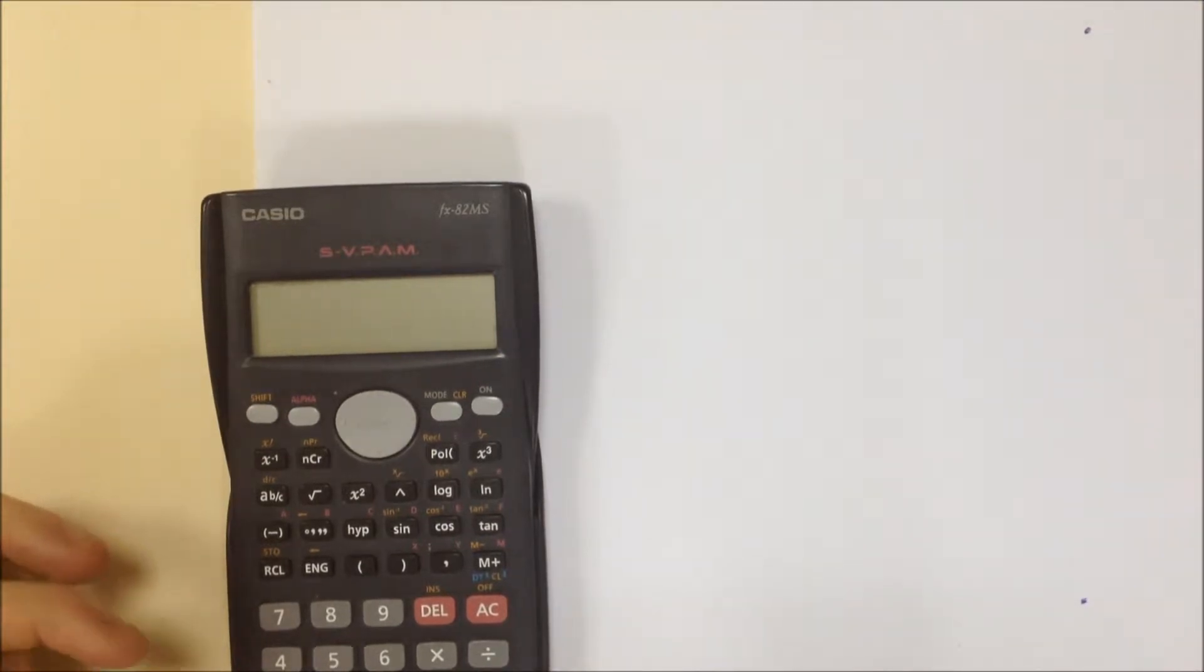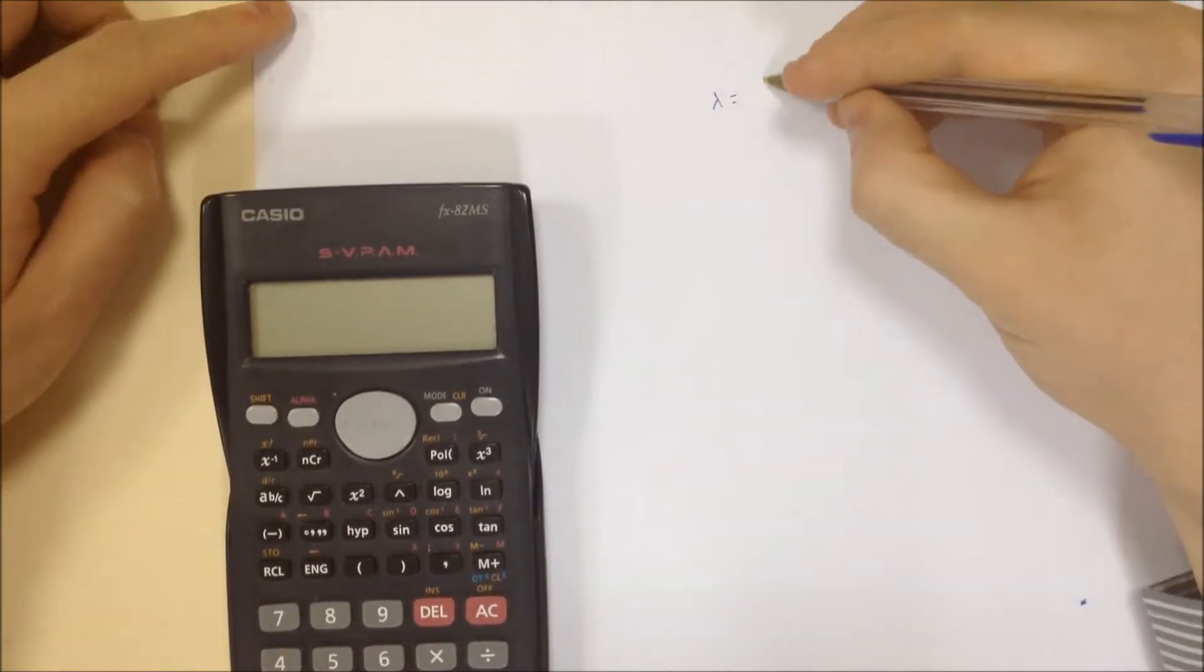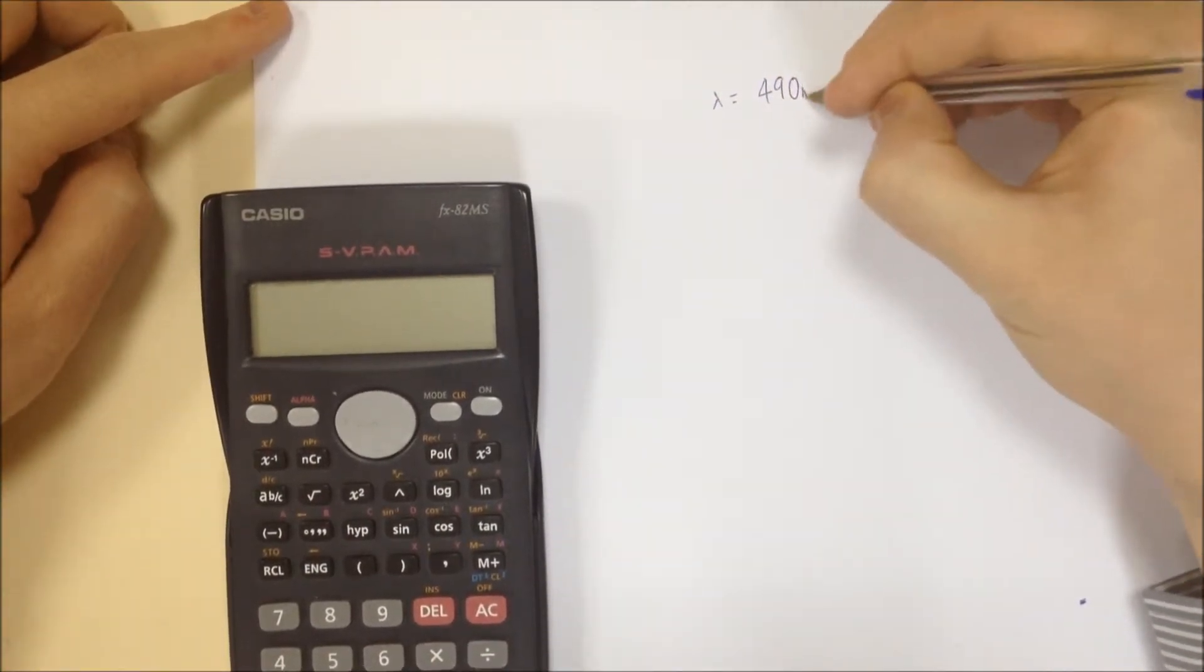Okay, so this video is going to go through that question 4 that a lot of people had a problem with. I'm just going to write down some information from the question first of all. So that was lambda equals 490 nanometers.